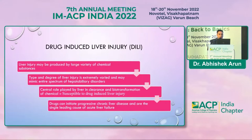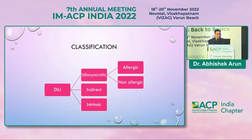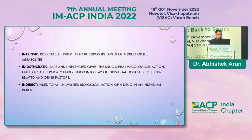Drug-induced liver injury may be produced by a large variety of substances. The type and degree of liver injury is extremely varied and may mimic the entire spectrum of hepatobiliary disorders. Drugs can initiate progressive chronic liver disease and are the single leading cause of acute liver failure. Classification is divided into three parts: idiosyncratic, indirect, and intrinsic. Idiosyncratic is further divided into allergic or non-allergic. Intrinsic is a predictable type of injury linked to toxic exposure levels of a drug or its metabolites, whereas idiosyncratic is rare and unexpected, linked to a poorly understood interplay of individual host susceptibility and other factors.